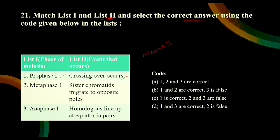Coming to the second one, metaphase 1 - sister chromatids migrate to opposite poles. No, in metaphase 1, all the chromosomes will be in the metaphase plate. So it is wrong. Coming to metaphase 1, homologous chromosomes line up at the equator in pairs - these are the pairs, so it is wrong. Now let's see the code. Code B is also wrong. Coming to option C - 1 is correct, 2 and 3 are false. Yes, code C is the correct answer.